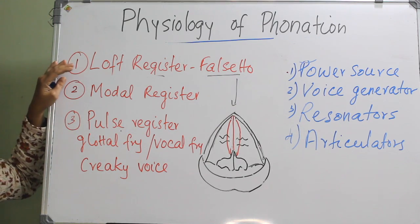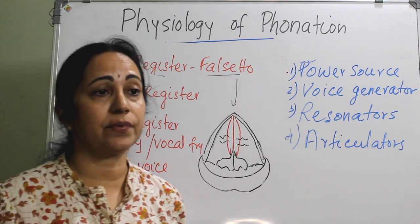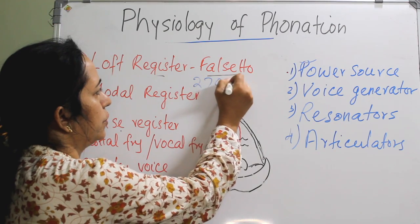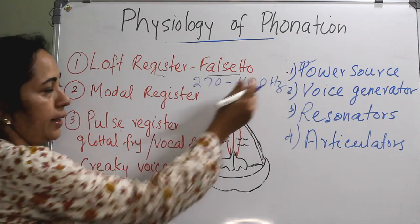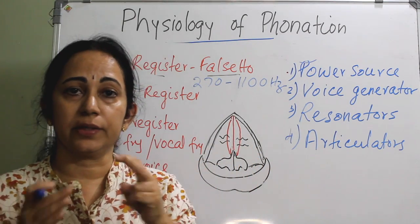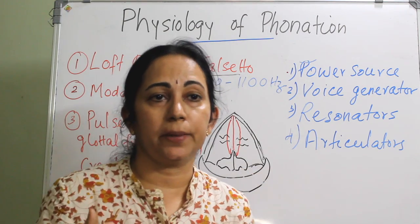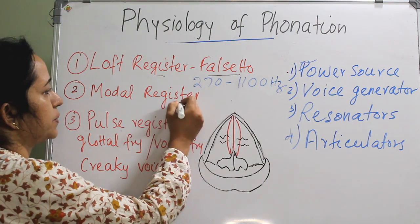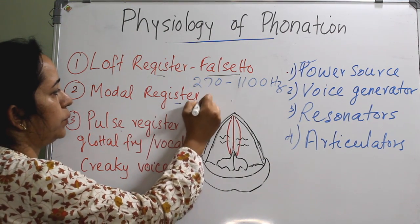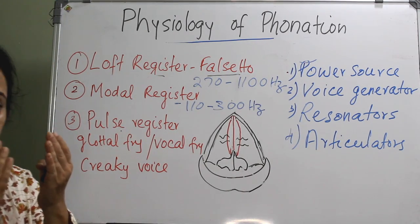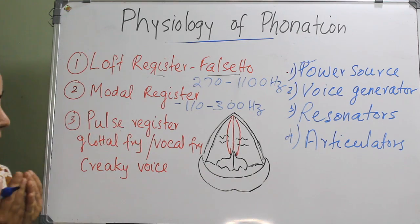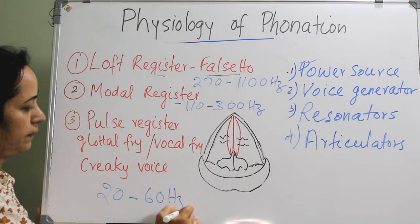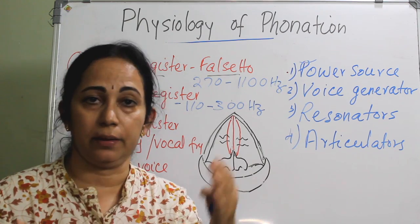To summarize the three registers: the loft register (falsetto voice) is the highest frequency, with a fundamental frequency range of around 270 to 1100 Hz — vocal folds are very tense and elongated with minimal vibration, the larynx is pulled up by the suprahyoid muscles, and the pharynx is shortened. The modal register is commonly used in most singing and speaking, especially in females, with a frequency range of around 110 to 300 Hz, with complete adduction during the vibratory cycle. The pulse register is the lowest, around 20 to 60 Hz, and has the longest closed phase.